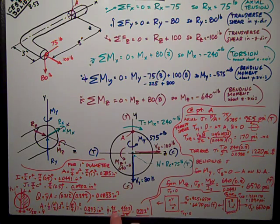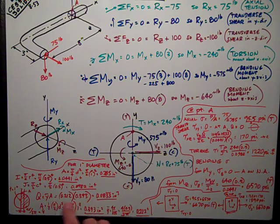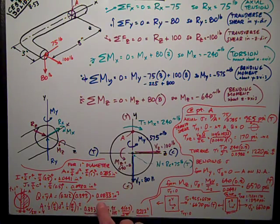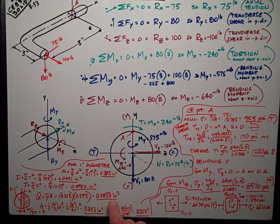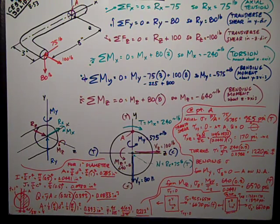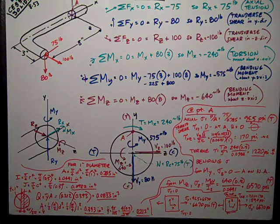Y-bar is equal to 4 times 0.5, the radius, divided by 3 pi, which is 0.212 inches. I multiply those two together to get Q: y-bar times A, so Q is 0.0833 at point A for shear in the Z direction.